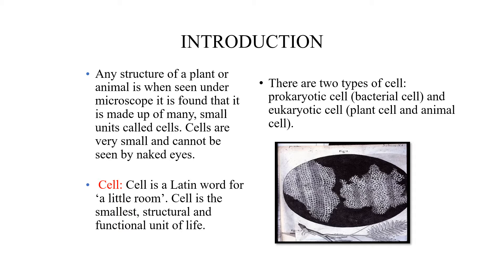Each wall is made up of brick, cement, sand, and gravel. Each brick is just like a cell. So the cell is the smallest structural and functional unit of life. There are two types of cells: prokaryotic cell and eukaryotic cell.